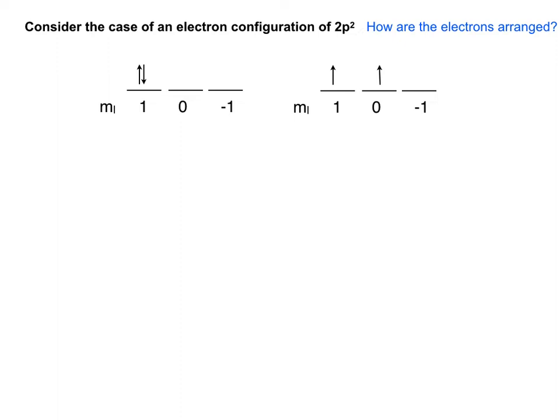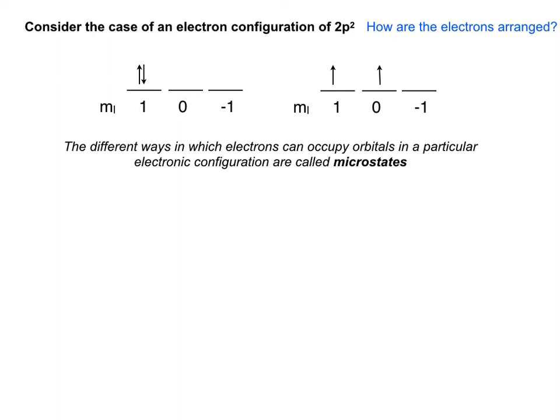The system on the right is the lower energy state — that is the lowest energy ground state of the system. Each of these different electronic configurations is called a microstate.